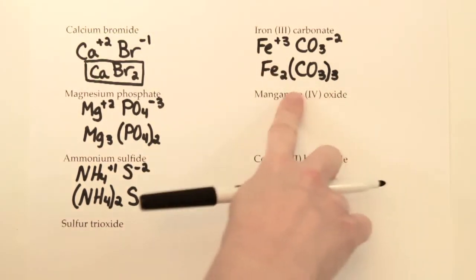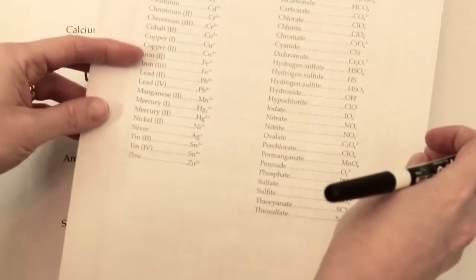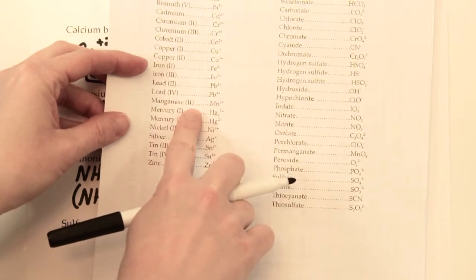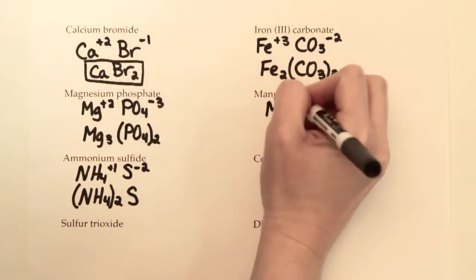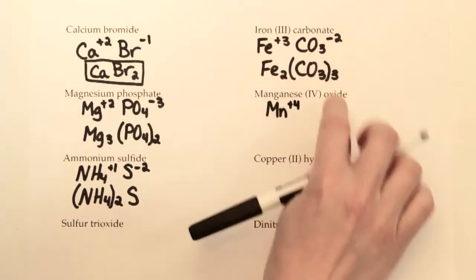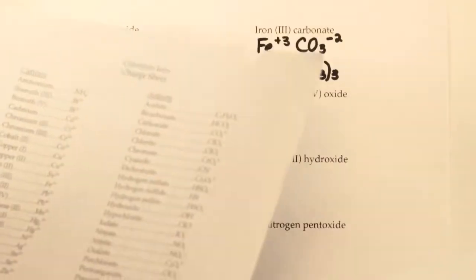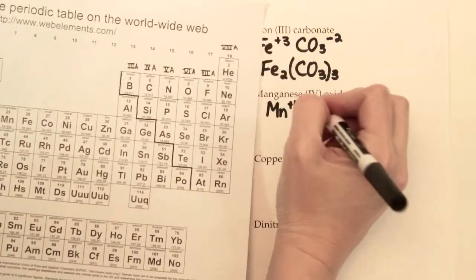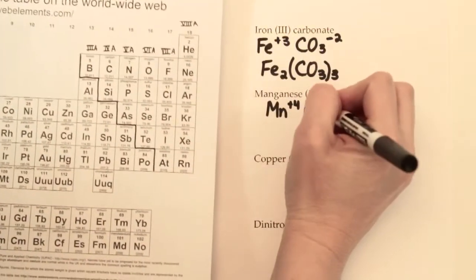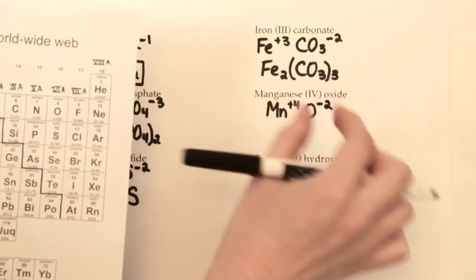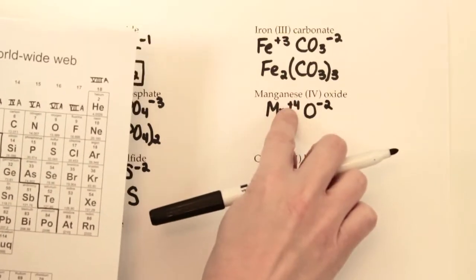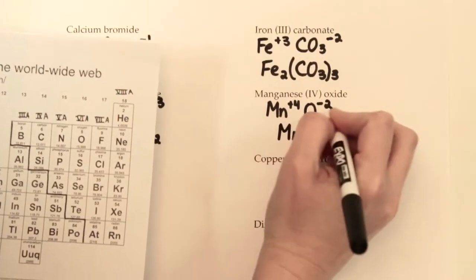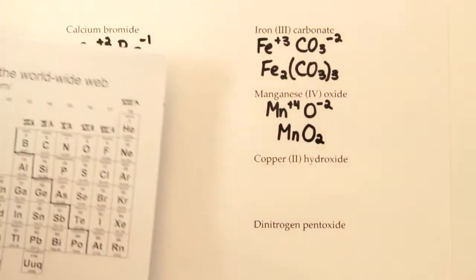For manganese(IV) oxide: manganese(IV) means Mn with a +4 charge. Even if your charge sheet only lists manganese(II) as Mn²⁺, you can infer that manganese(IV) is Mn⁴⁺. Oxide ends in -ide, which means one element — oxygen. Oxygen forms −2 charges in compounds. Balancing +4 and −2, the LCM is 4, so we need one manganese and two oxygens. The formula is MnO₂.